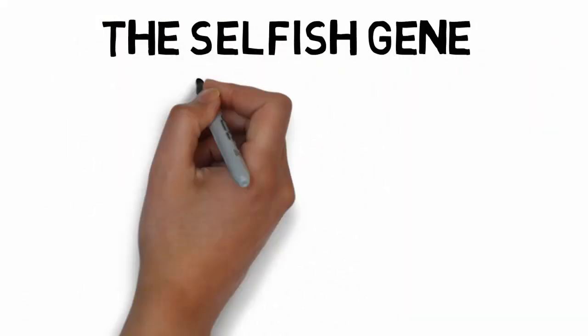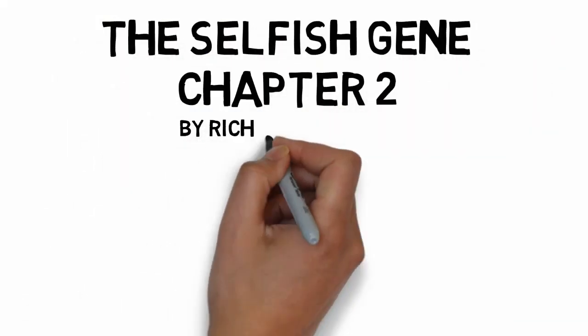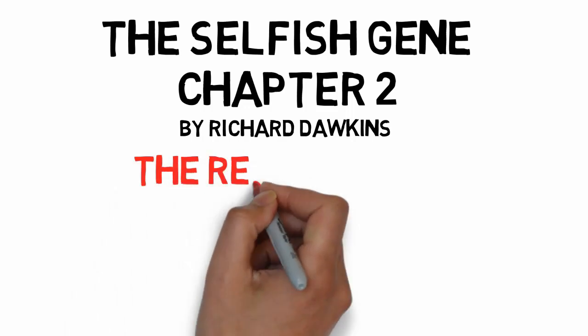The Selfish Gene Chapter 2 by Richard Dawkins: The Replicators.